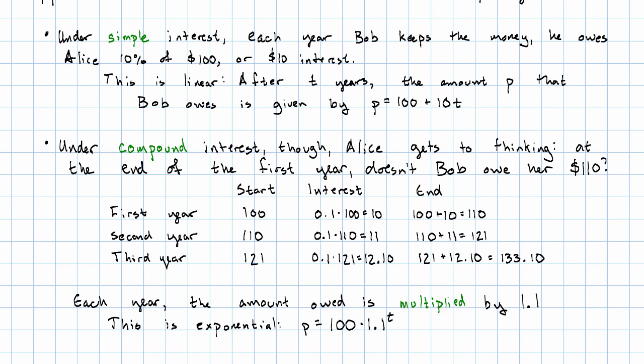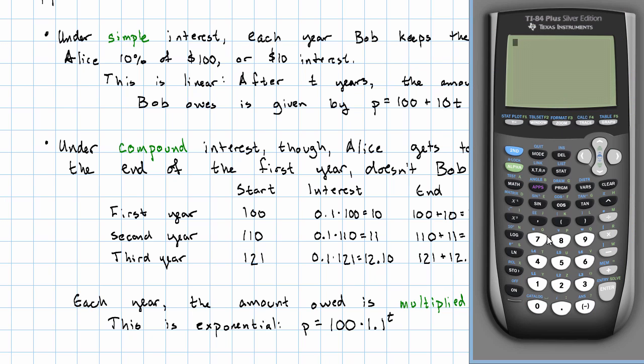So after three years, the amount owed is 100 times 1.1 to the third power, $133.10, which is just what we figured out in the table.